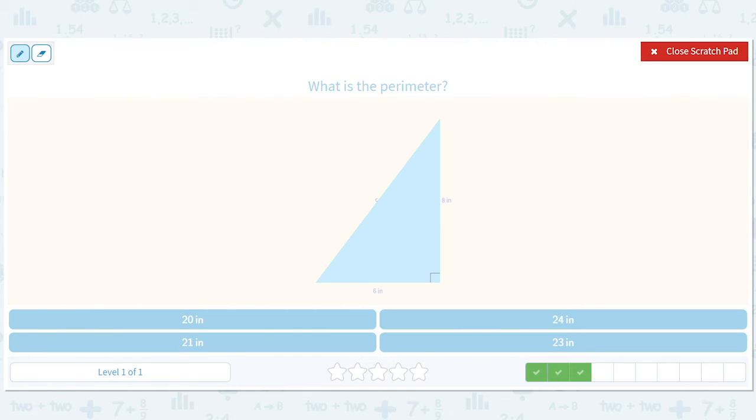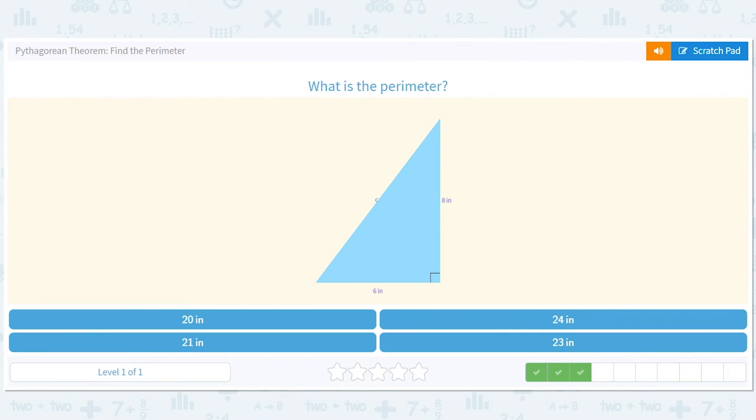Again, this is 3-4-5, so boom, we can say that's 10. How can we do that with a shortcut? Well, that's 3, that's 4, that would be 5.